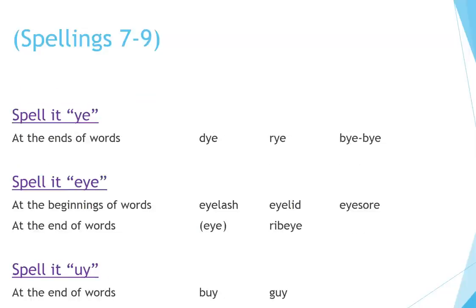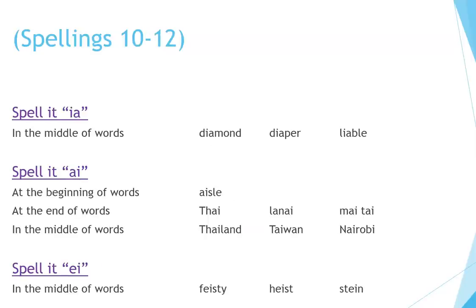Spellings seven to nine. Spell it Y-E at the ends of words: dye, wry, bye-bye. Spell it E-Y-E at the beginnings of words: eyelash, eyelid, eyesore; at the end of words: eye, ribeye. Spell it U-Y at the end of words: buy, guy. Spellings ten to twelve. Spell it I-A in the middle of words: diamond, diaper, libel. Spell it A-I at the beginning of words: isle; at the end: tai, lanai, Mai Tai; in the middle: Thailand, Taiwan, Nairobi. Spell it E-I in the middle of words: feisty, heist, stein.